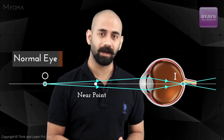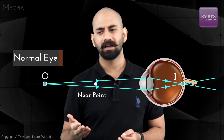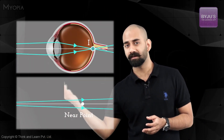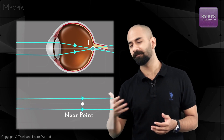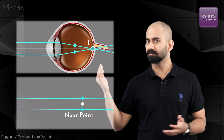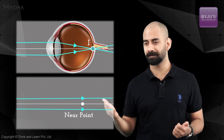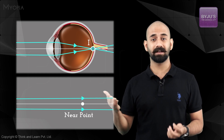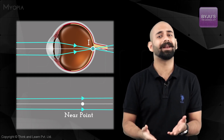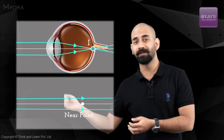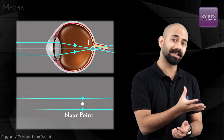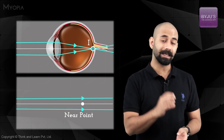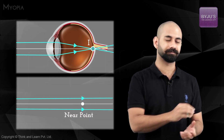In contrast, for a normal eye, regardless of how far the object is, the image will still be formed on the retina. Because the far point for a normal eye is at infinity, even when rays arrive completely parallel the image is still focused on the retina.